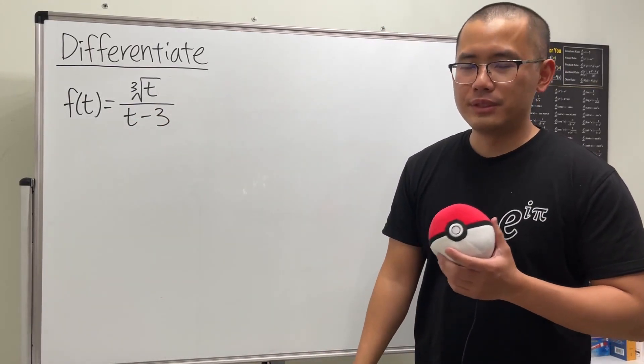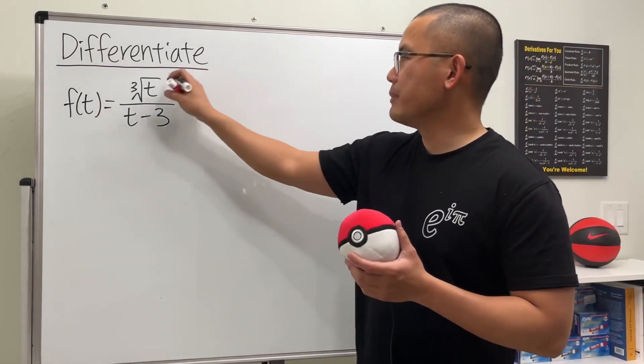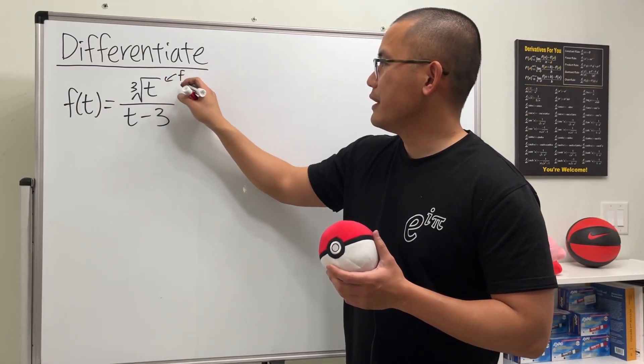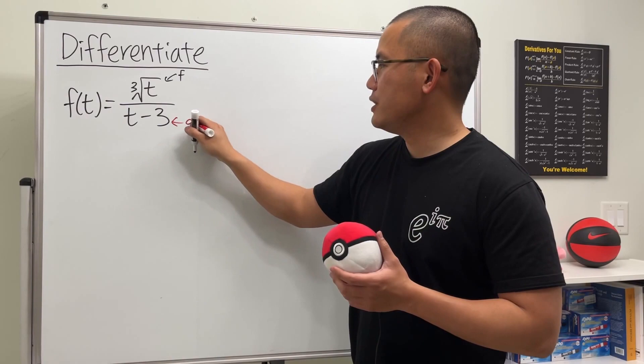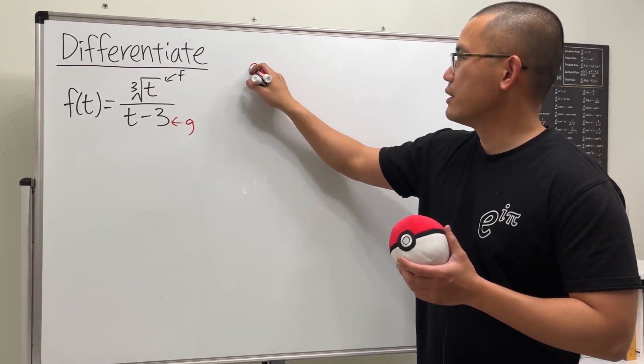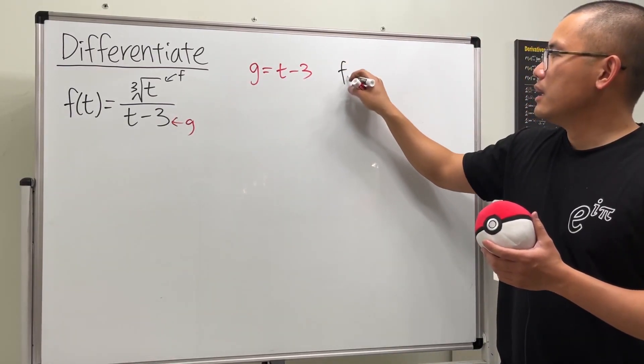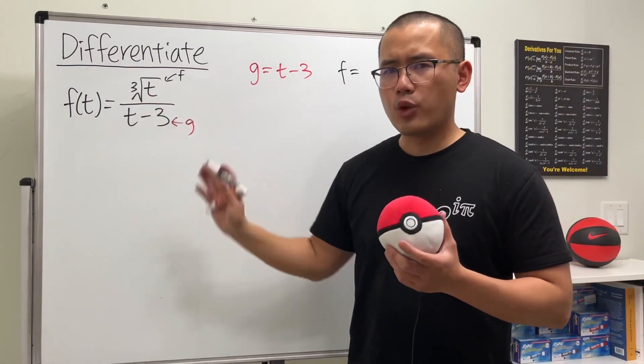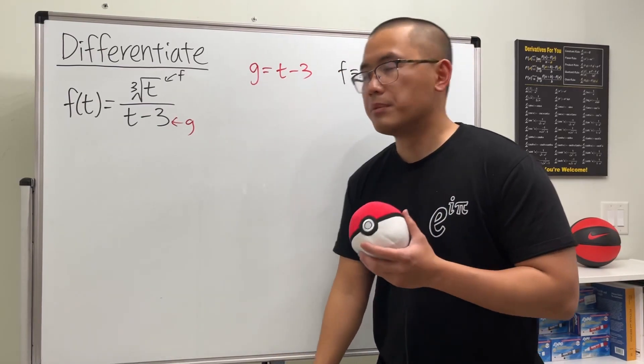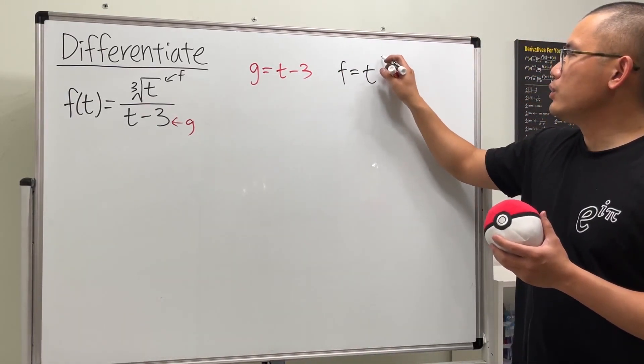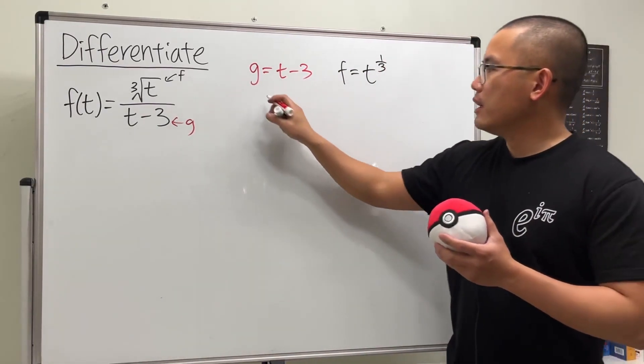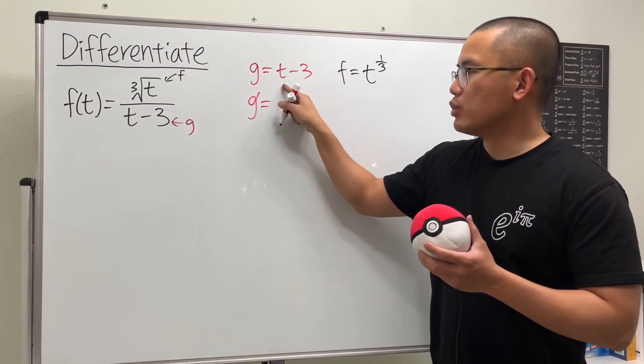So of course we have to use the quotient rule, and I'm going to write down the top as little f and the bottom as little g. We're going to write down the g function first. So here we have t minus 3, and then little f, well here we have the cube root that's written as the one-third power, so t to the one-third power.